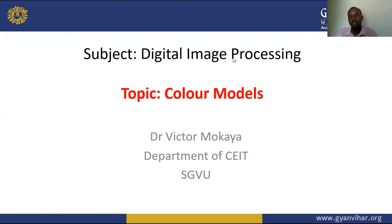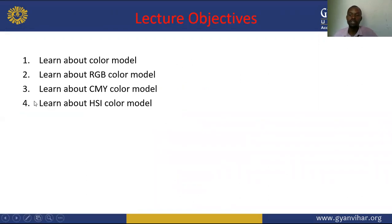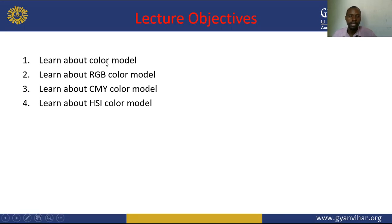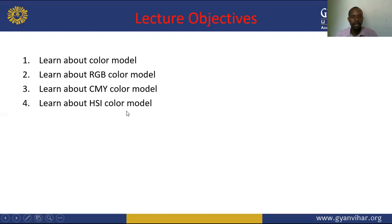We have four objectives we'll be covering in this class. In the previous class we looked at colour fundamentals; in this class we'll be looking at colour models. The first objective is to define what a colour model is and what components make it up. We'll then study three types: the RGB colour model, the CMY model (cyan, magenta and yellow), and the HSI colour model (hue, saturation and intensity).